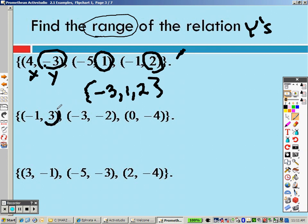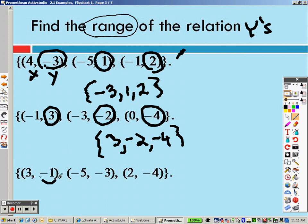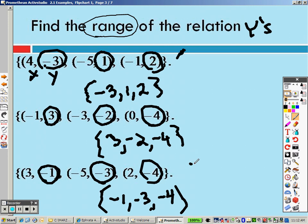All the y's in this one is 3, negative 2, and negative 4. So 3, negative 2, and negative 4 is your range for that one. All the y's, it's negative 1, negative 3, and negative 4. If you really wanted to, you could write these in order from lowest to highest. You could rewrite that as negative 4, negative 3, and negative 1 as the range if you'd like.